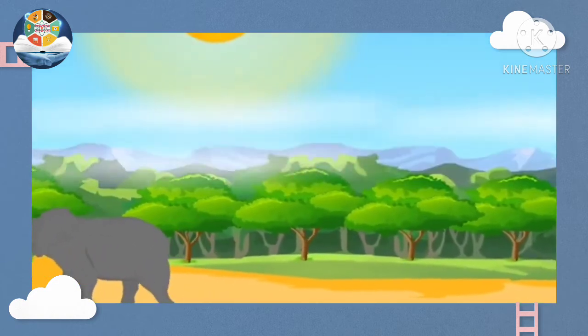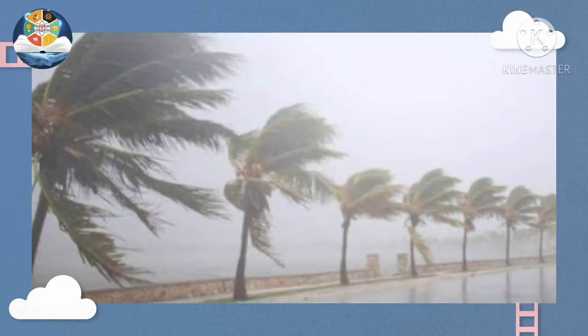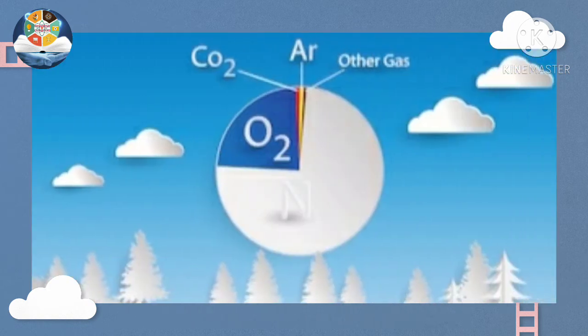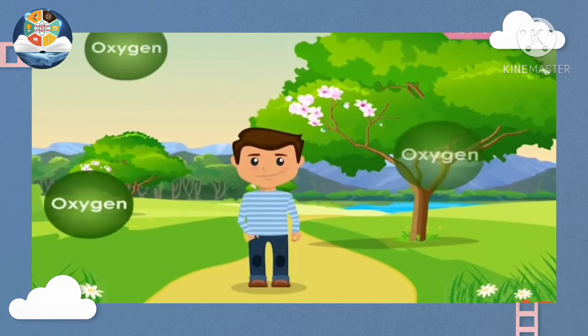Moving air is called wind. Very fast moving air that causes destruction is called storm. Air is a mixture of many gases surrounding the earth. The air we breathe contains oxygen.